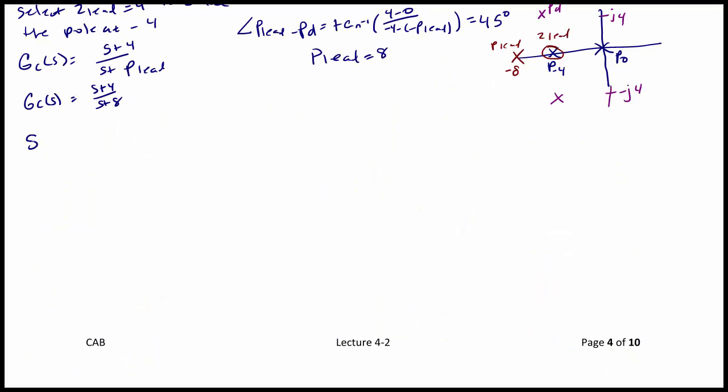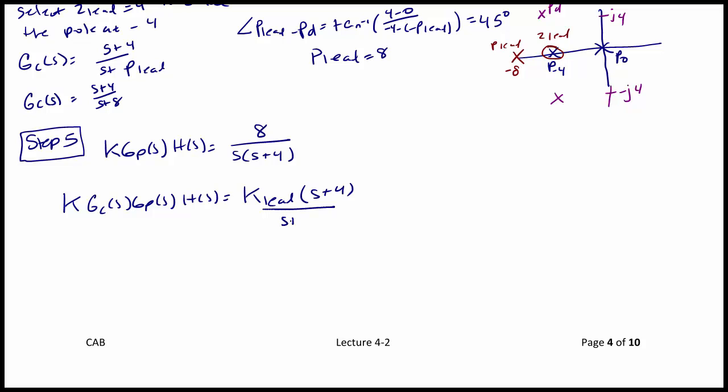Step 5. Recall that in the first step, we had K, GP of S, H of S, and that's equal to 8 over S times S plus 4. And we now also have our compensator. So what we need to select now is K lead. So once we have the compensator system, we have K, GC of S, GP of S, H of S. So this is going to be the gain for K lead times S plus 4 over S plus 8 times 8 over S times S plus 4. So we do have the S plus 4's that cancel out.